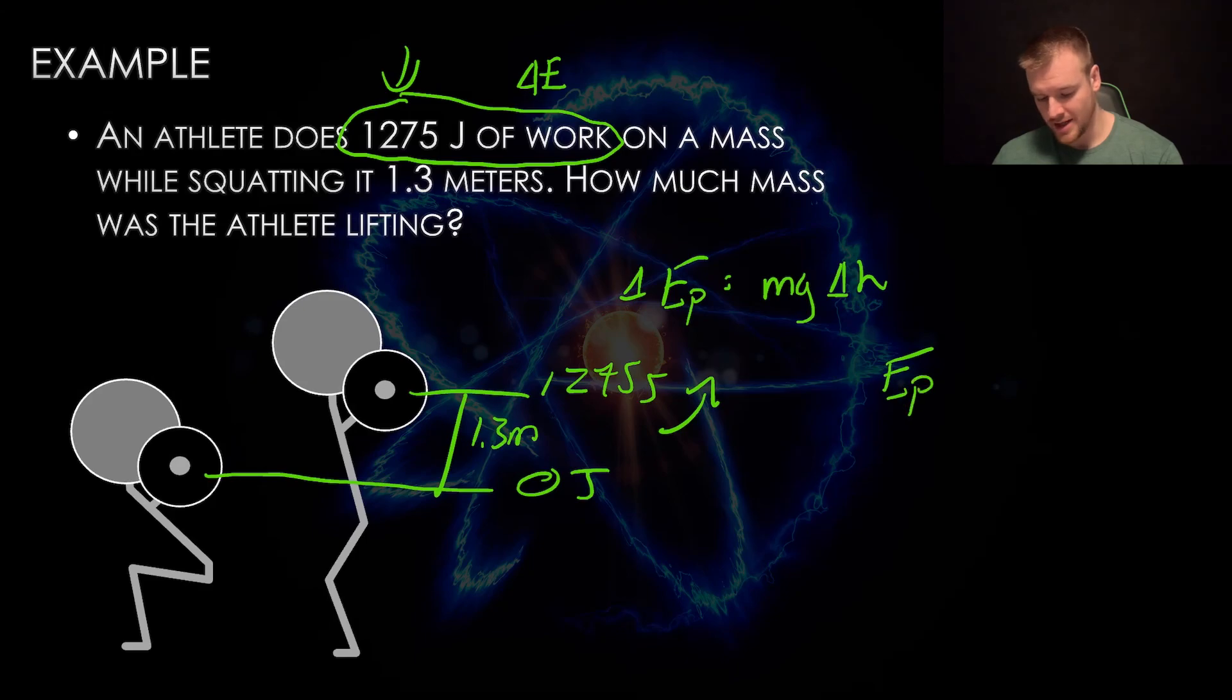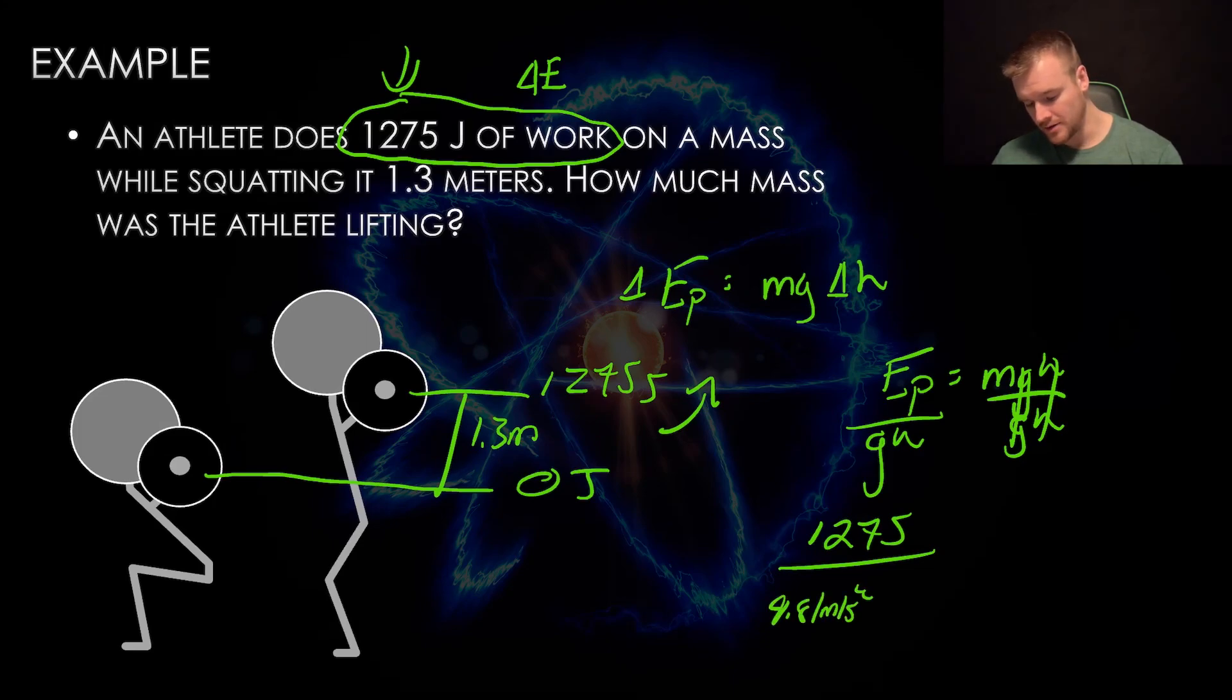Following that line of thinking, we're going to say at the start it has zero joules of energy at that height. At the lifted point it has 1,275 joules because that was the work done. From zero to 1,275, those are the easiest numbers to work with. This is 1.3 meters. Now we can plug into this equation and solve. We got to rearrange EP equals MGH. We are solving for mass. Reverse order of BEDMAS—no addition, subtraction. Next is division multiplication. The mass is being multiplied by gravity and by height, so I divide by G and divide by H.